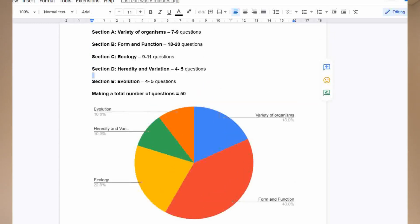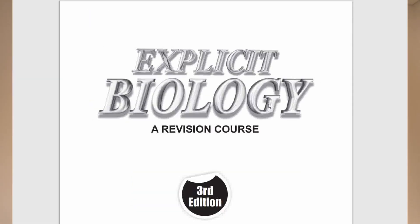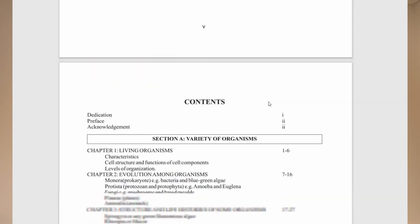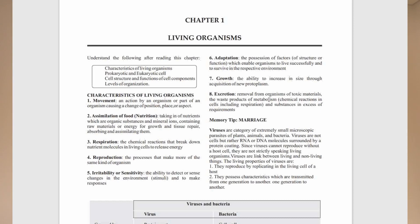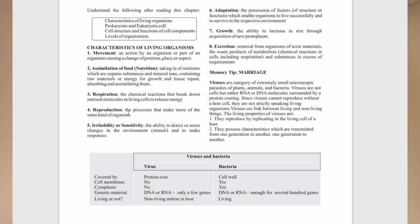Now let's go back to today's work. Based on the book Exclusive Biology, I will go through the very first chapter with you. This first chapter is on living organisms. In this chapter, you are expected to understand the characteristics of living organisms. These characteristics are summarized as: movement, assimilation of food, respiration, reproduction, irritability or sensitivity, adaptation, growth, and excretion.